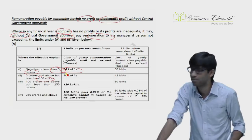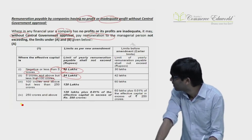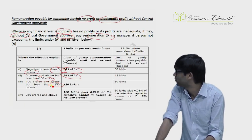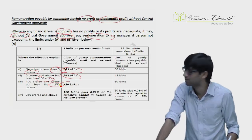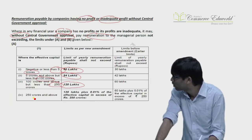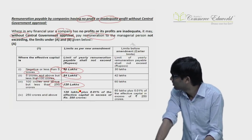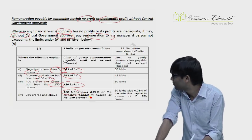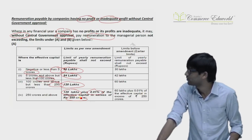If the effective capital is more than or equal to 100 crores but less than 250 crores, the maximum manager's remuneration is 120 lakhs. If the effective capital is 250 crores or more, the maximum manager's remuneration is 120 lakhs plus 0.01% of the effective capital over 250 crores.